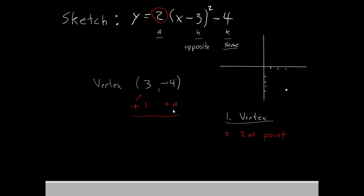So for our second point, we will go 3 plus 1 is 4. And since a is positive 2, negative 4 plus 2 is negative 2. So our second point is 4, negative 2, which will be about here.